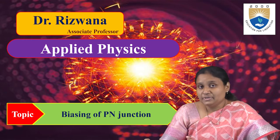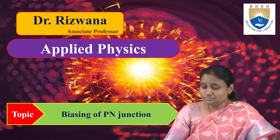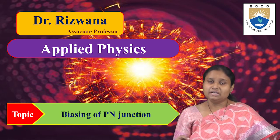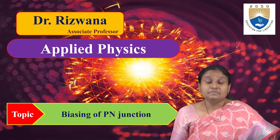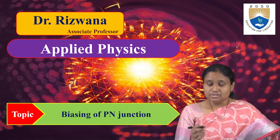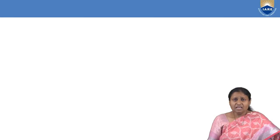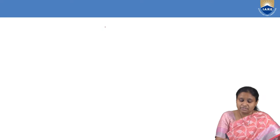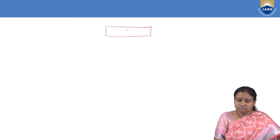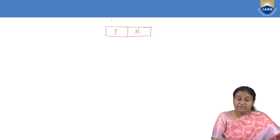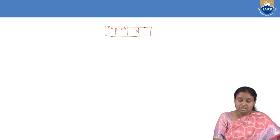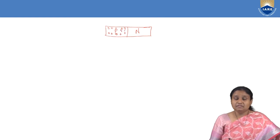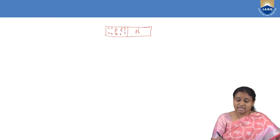Before going into detail, first I would like to recollect what exactly happens when a PN junction is formed. We know that if we take extrinsic semiconductors — P-type and N-type — and join them together: in P-type semiconductor, we have majority charge carriers called holes, and in N-type semiconductor, we have majority charge carriers called electrons.